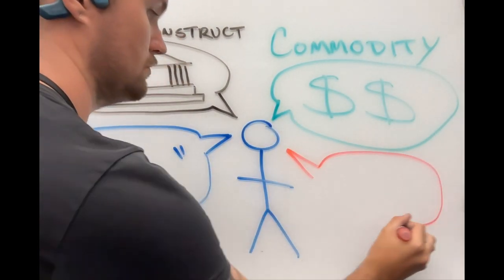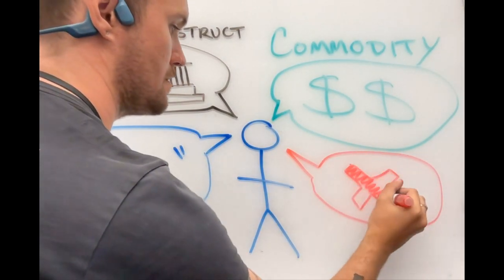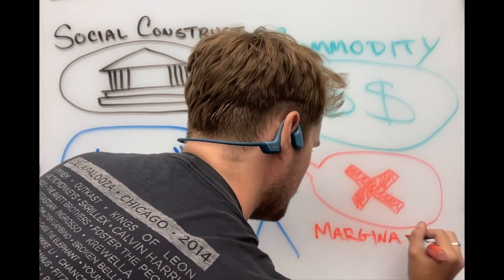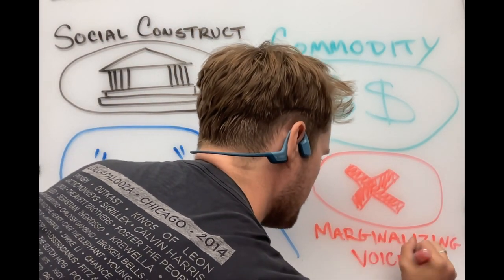The systems that produce and share information, such as the publishing industry, academic institutions, and governments, can marginalize certain individuals and groups.